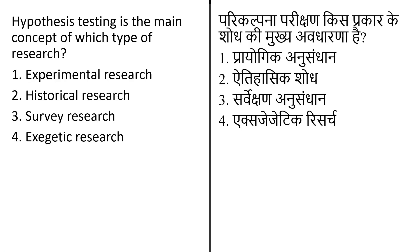Hypothesis testing is the main concept in which of the following types of research? Experimental research tests the hypothesis and establishes conclusions by using independent and dependent variables in a controlled environment. It randomly assigns people to different conditions using hypothesis testing to make inferences about how conditions affect behavior. Experimental research is designed for establishing causal relationships.